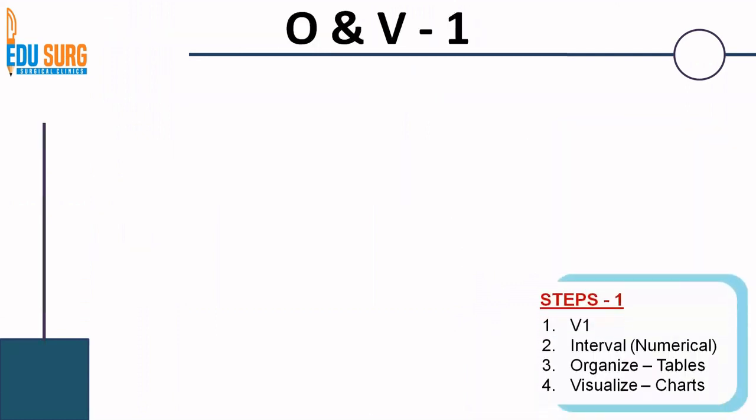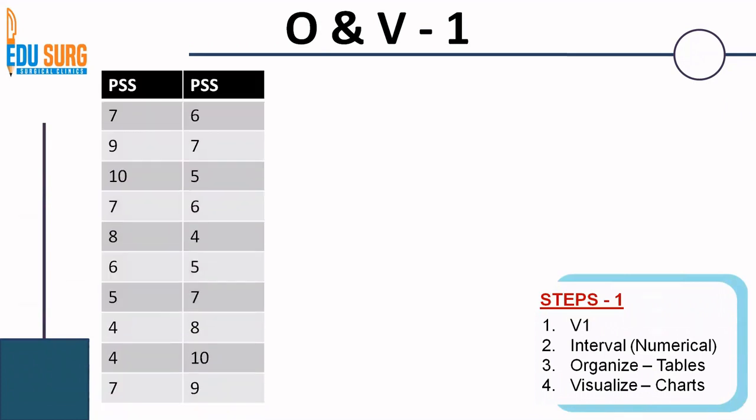Going into the first, the variable is single. It is interval or numerical data. Let us see how to organize. The same patient satisfaction score data can be an interval or an ordinal. What we have done is here the patient satisfaction score is from one to ten.